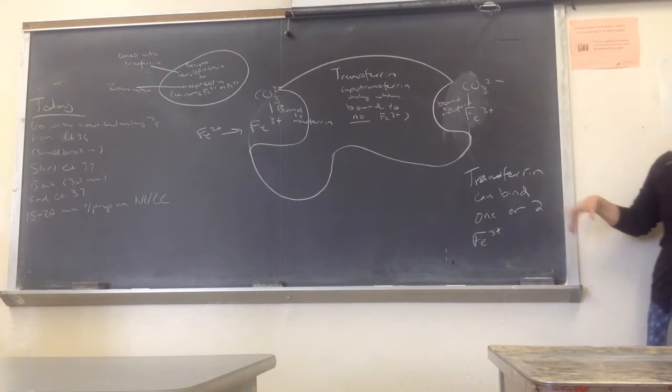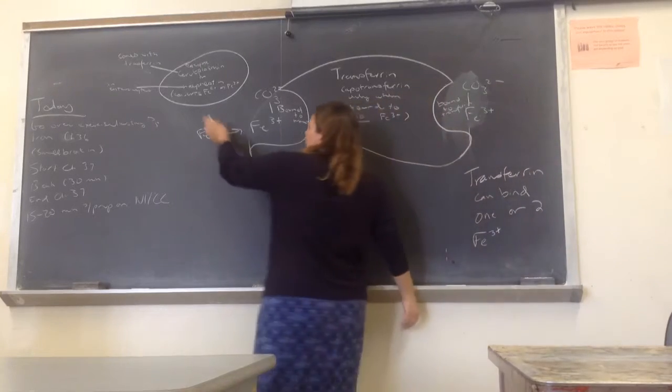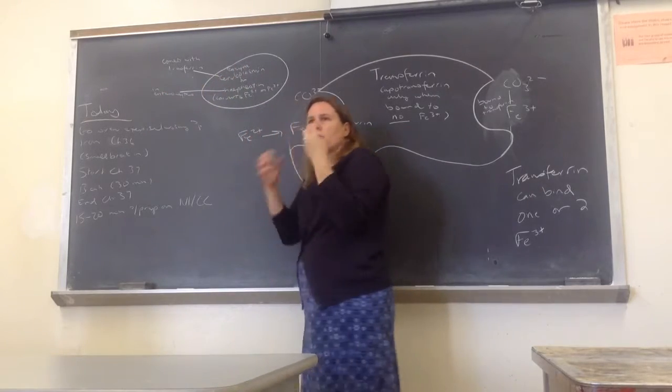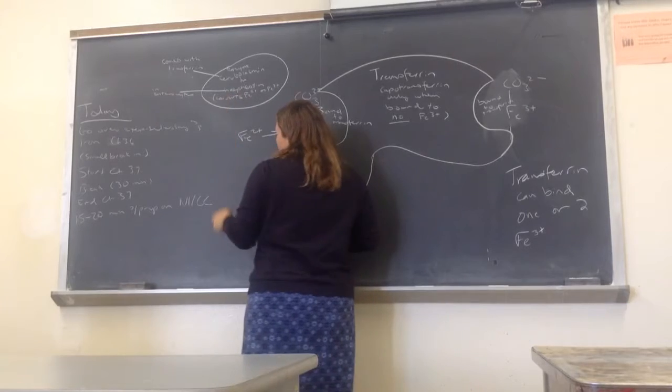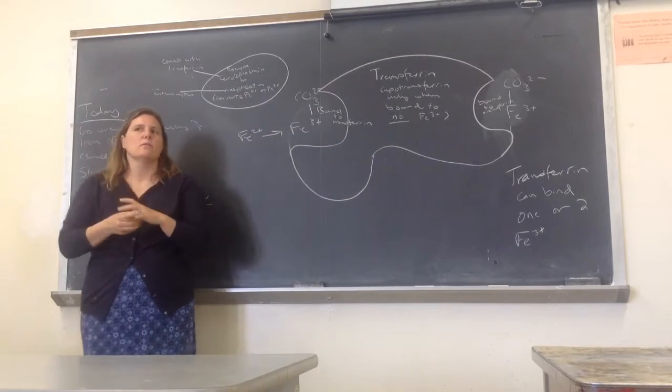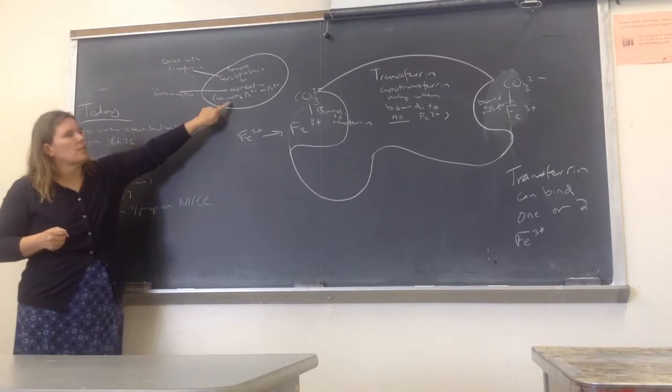What's the enzyme? There are two different enzymes. One is ceruloplasmin, and that usually comes with transferrin. It's associated right close to it. The other one is hephaestin, and that's in or with the enterocyte only. Either one will do the same job.